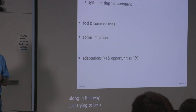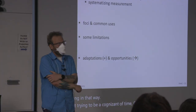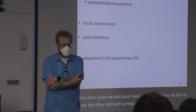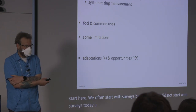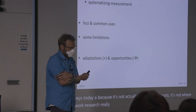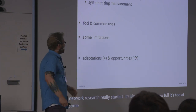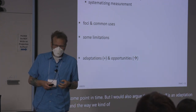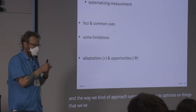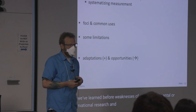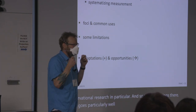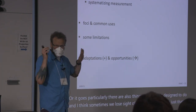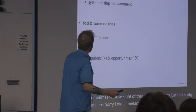Often when we talk about network data collection, we start with surveys. I intentionally did not start with surveys today — because it's not actually our historical roots; it's where we evolved to at some point. I would also argue that surveys themselves are an adaptation: the way we approach surveys was trying to optimize on weaknesses we learned from experimental or observational research. There are things surveys do particularly well, and also things they are not designed to do, and I think sometimes we lose sight of that.